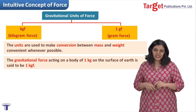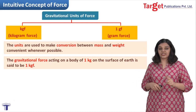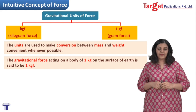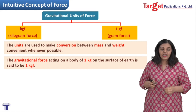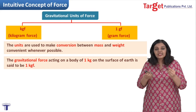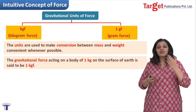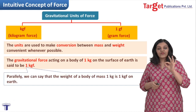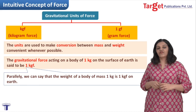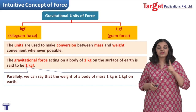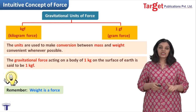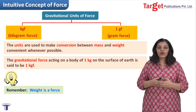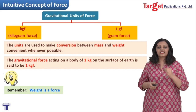Let's define what is one kilogram force. The gravitational force acting on a body of 1 kg on the surface of the earth is said to be 1 kgf. Simply speaking, the gravitational force acting on a body is nothing but the weight of the body. So the weight of a body of mass 1 kg is 1 kgf on earth. This is because weight is a force. Remember this is very important — weight is a force whereas mass is not. So whenever I am talking about gravitational force acting on a body, I am actually asking you what is the weight of the object.